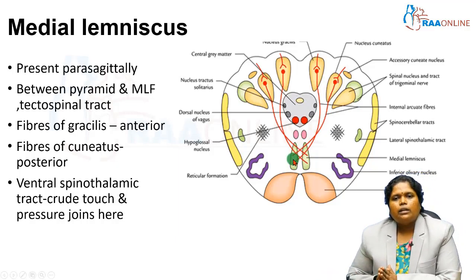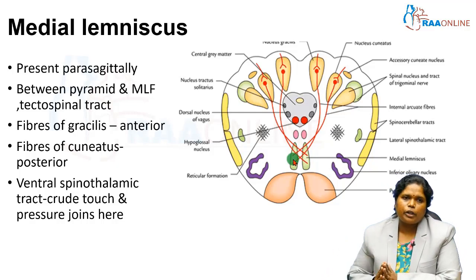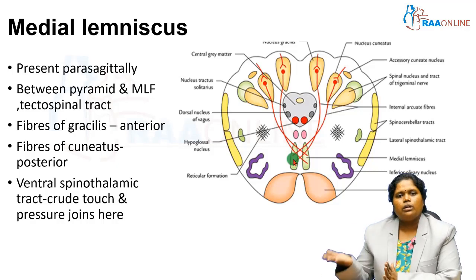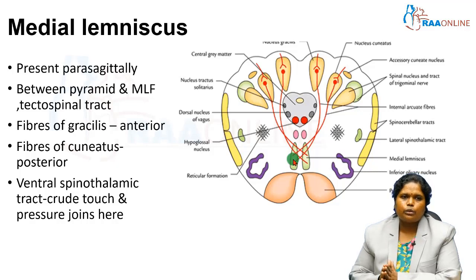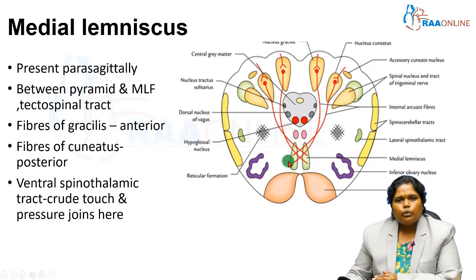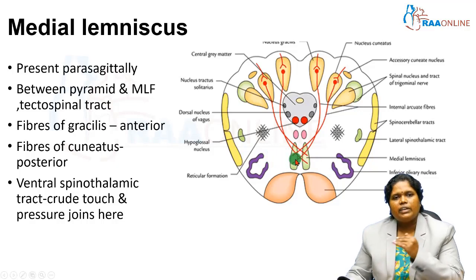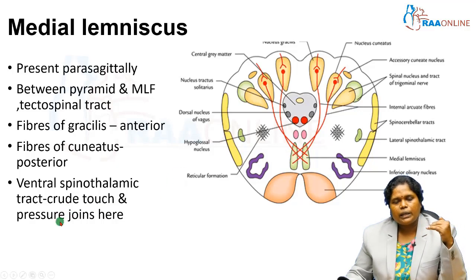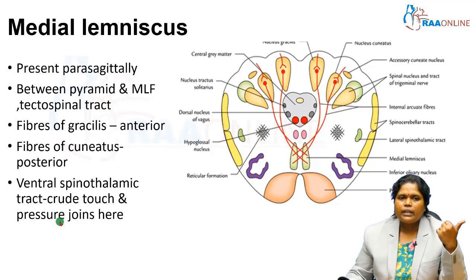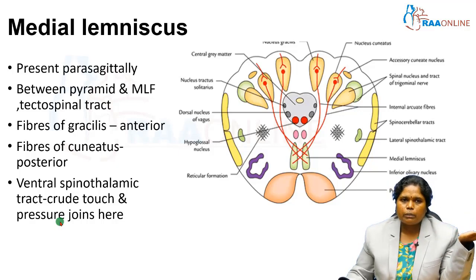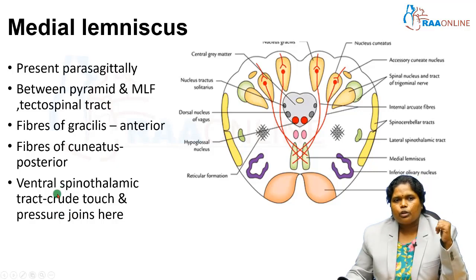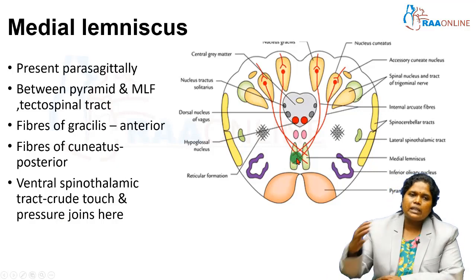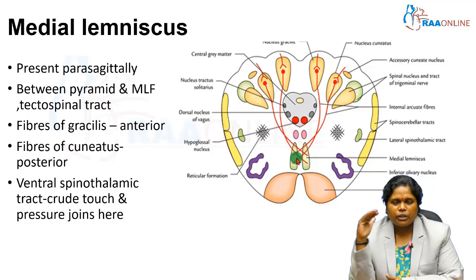Along with the medial lemniscus, the anterior (ventral) spinothalamic tract, which carries crude touch and pressure from the upper limb, lower limb, and trunk, joins with the medial lemniscus. The lateral spinothalamic tract, which carries pain and temperature, ascends separately. Above this level, there is no separate ventral spinothalamic tract because it merges with the medial lemniscus fibers.